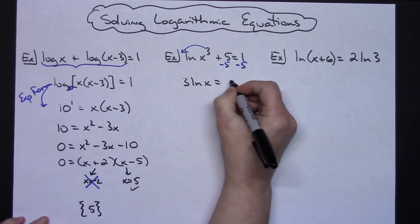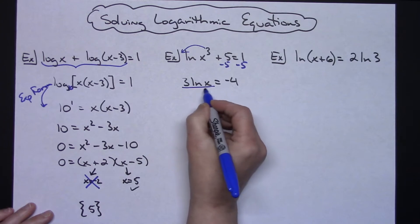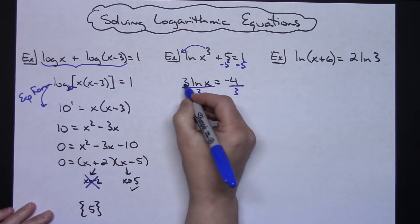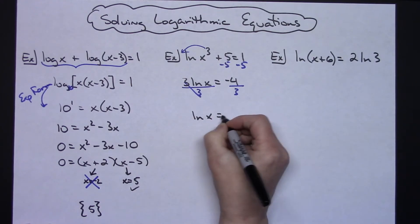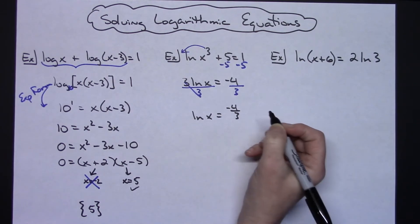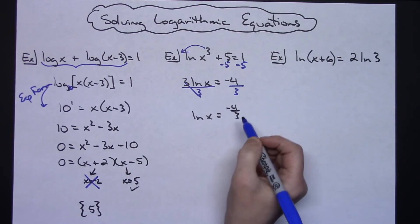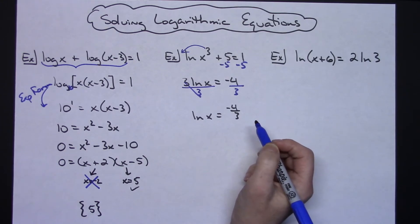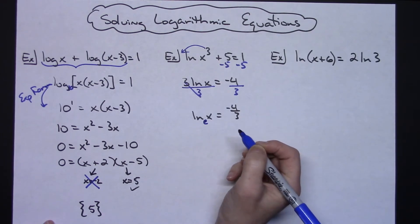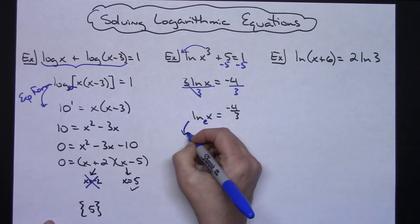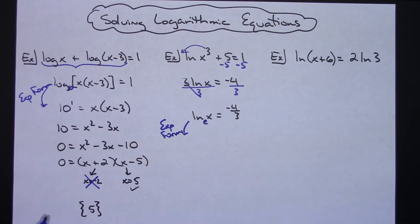At that point then I'm going to try to isolate that log, so I'm going to divide both sides by 3. Then I'm going to have the natural log of X equals a negative 4 thirds. Now again I've got my log simplified on the left hand side equaling something on the right hand side. This now I can go to exponential form. The natural log has a base of e, so I'm going to go to exponential form again but this time using an e. So I will have an e raised to the negative 4 thirds equaling X.